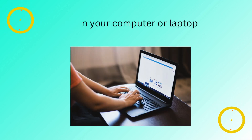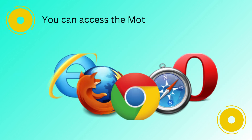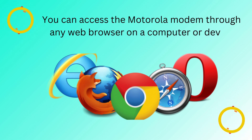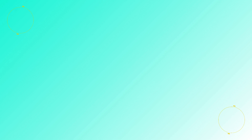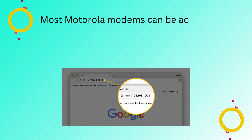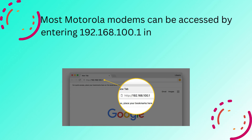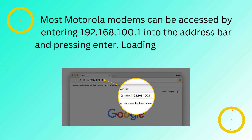Open your computer or laptop and open your web browser. You can access the Motorola modem through any web browser on a computer or device that is connected to your network. Enter the modem address into the browser bar. Most Motorola modems can be accessed by entering 192.168.100.1 into the address bar and pressing Enter.